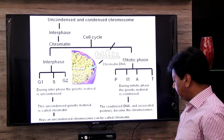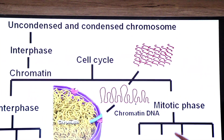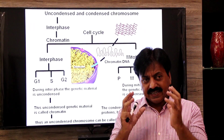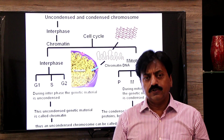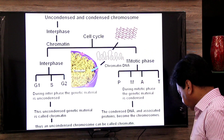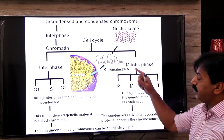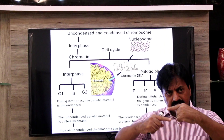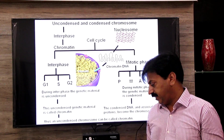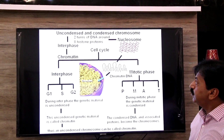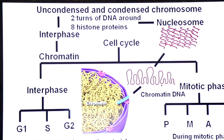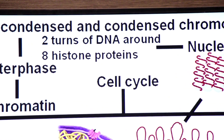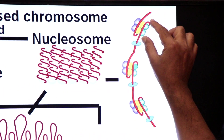This chromatin DNA starts coiling around nucleosomes. Two turns of DNA around eight histone proteins — this is called a nucleosome. These are the structural units. Here is one nucleosome, here is a second nucleosome, here is a third nucleosome.